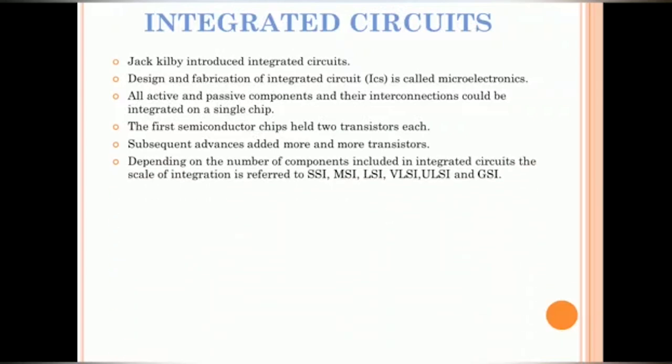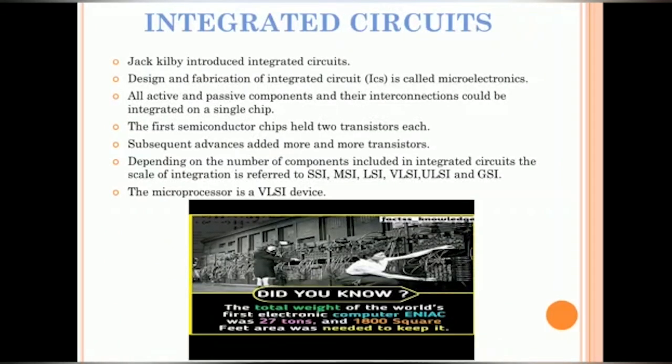In the later advances added more and more transistors. Depending upon the number of components included in integrated circuits, the scale of integration is referred to SSI, MSI, LSI, VLSI, ULSI and GSI. The microprocessor is a VLSI device. Did you know that the first electronic computer ENIAC was 27 tons and 1800 square feet area was needed to keep it.